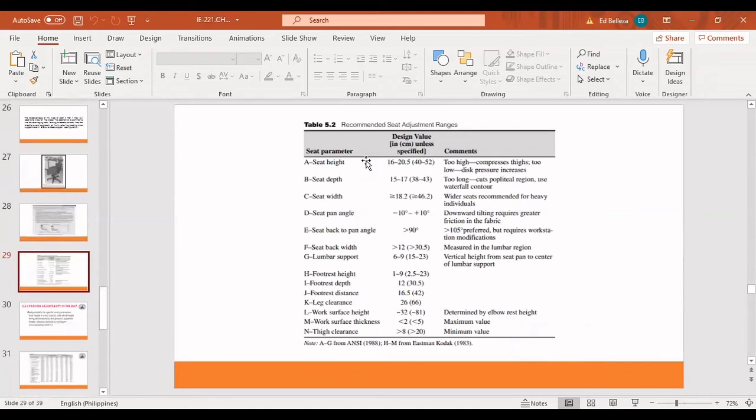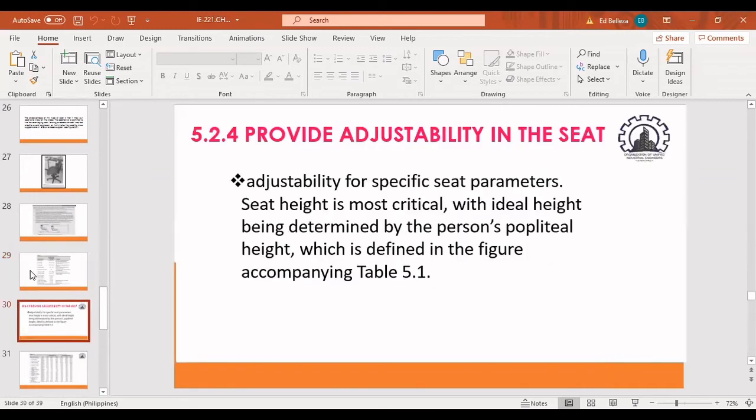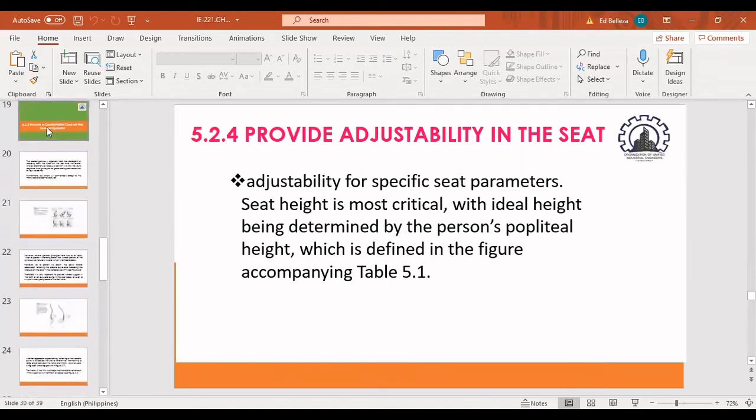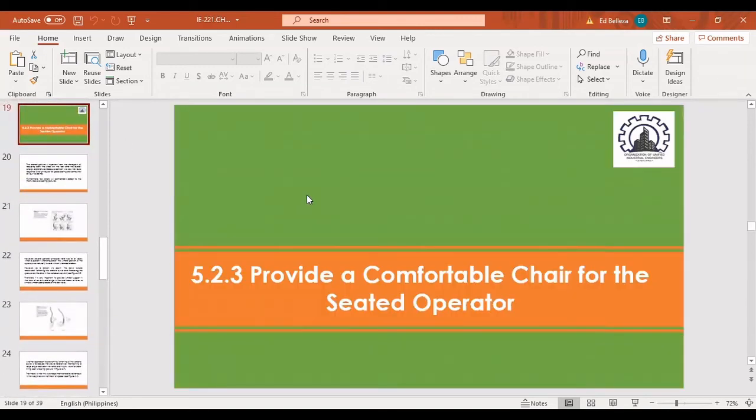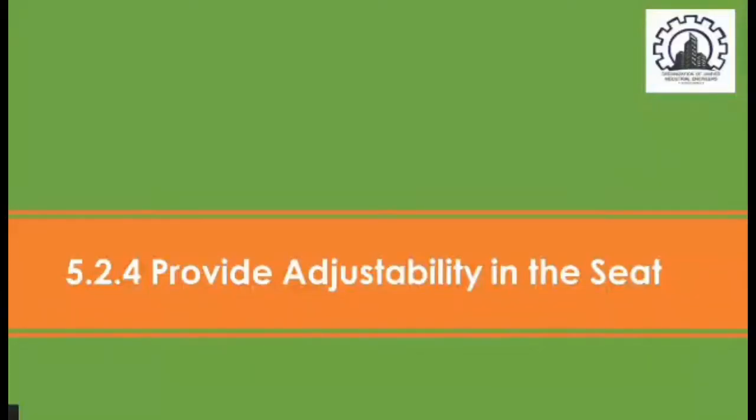Let's have the next one here. This is the recommended seat adjustments on table 5.2. You can see here that these are the seat parameters here. Seat height, seat depth, seat width, and so on. And these are the design value in centimeter. And, for example, let's have the seat height number letter A. And it actually has 16 to 20.5. And the comments would be here. So, it would be too high, compresses thighs too low, and this pressure increases. And that would be so on. And I think that would be all here for the 5.2.3, this is all about provide a comfortable chair for the seated operator.